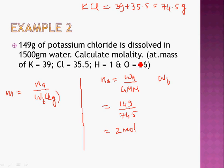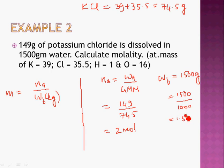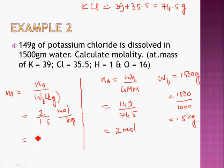The mass of water is directly given as 1500 grams. Converting to kilograms: 1500 ÷ 1000 = 1.5 kg. Substituting into the formula: molality = 2 ÷ 1.5 moles per kilogram. You can divide to get the exact value. This is your final answer for the molality of the KCl solution.